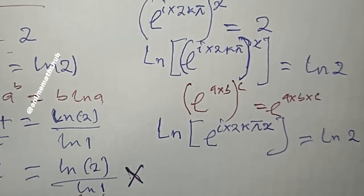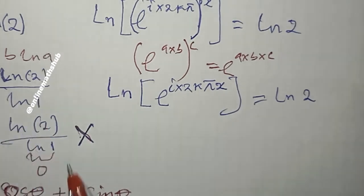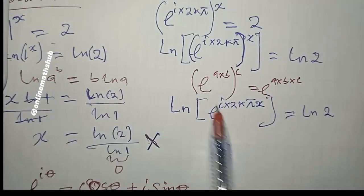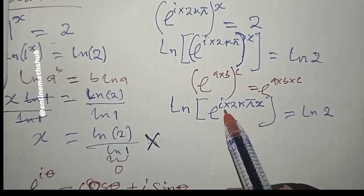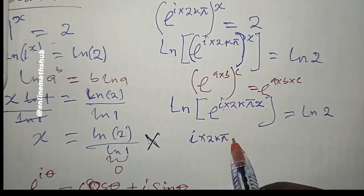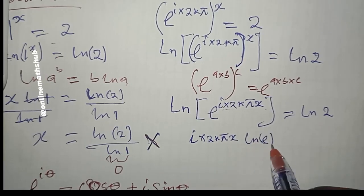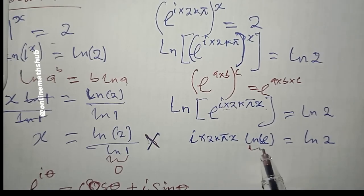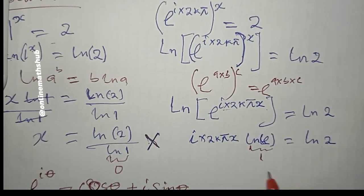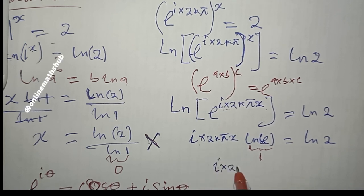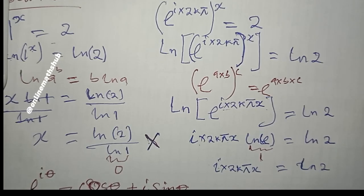Applying the log power rule to bring down the exponent, we get i·2kπx · ln(e) = ln(2). Since ln(e) = 1, multiplying by 1 leaves us with i · 2kπx = ln(2).